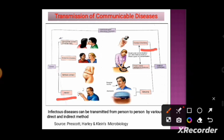Airborne disease can also be caused by indirect contact. During sneezing or coughing, infected persons generate airborne droplets containing microorganisms. These droplet nuclei land on surfaces or objects. When a healthy person touches a contaminated surface and then touches their mouth or eyes — the mucous membrane — the microorganism enters their body and the disease is transmitted.